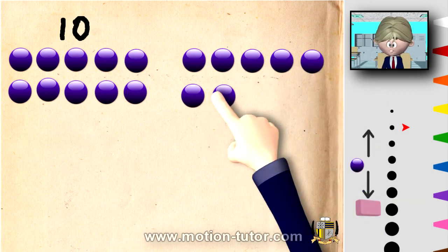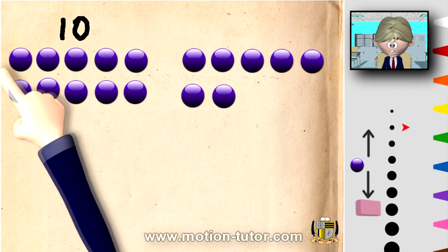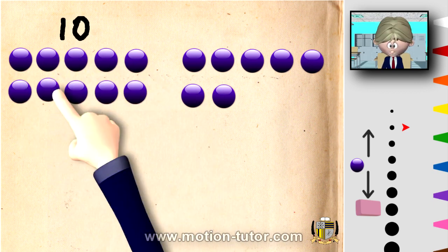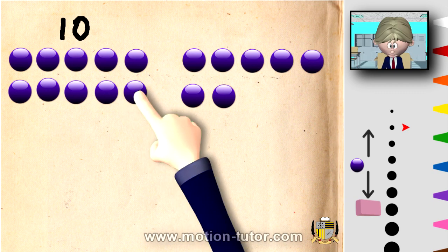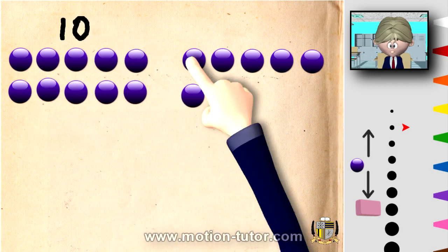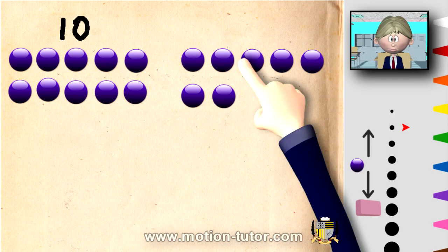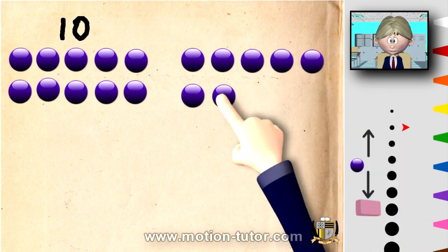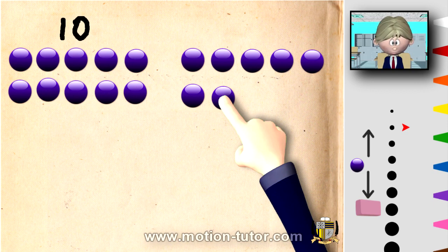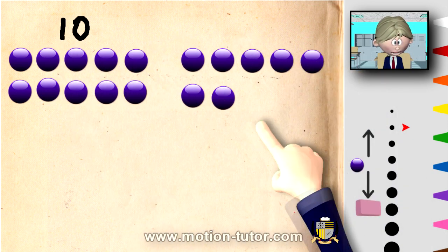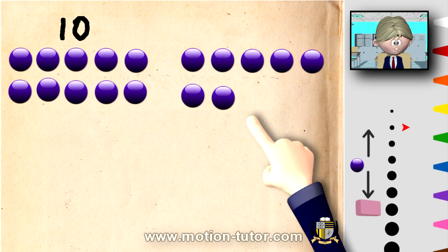What does that equal to? Well, let's count them all: 1, 2, 3, 4, 5, 6, 7, 8, 9, 10, 11, 12, 13, 14, 15, 16, and 17. So, 10 and 7 more is 17.